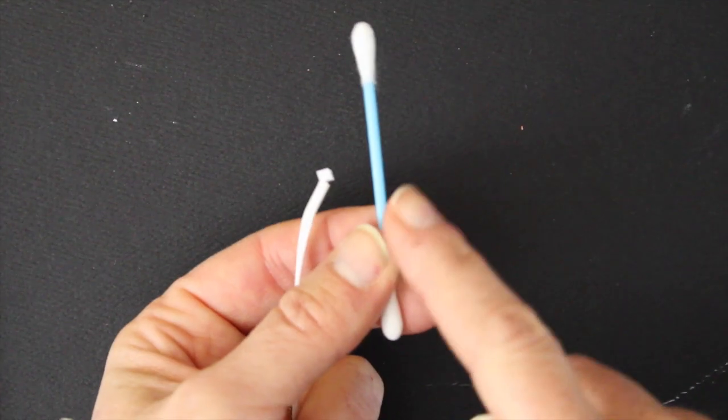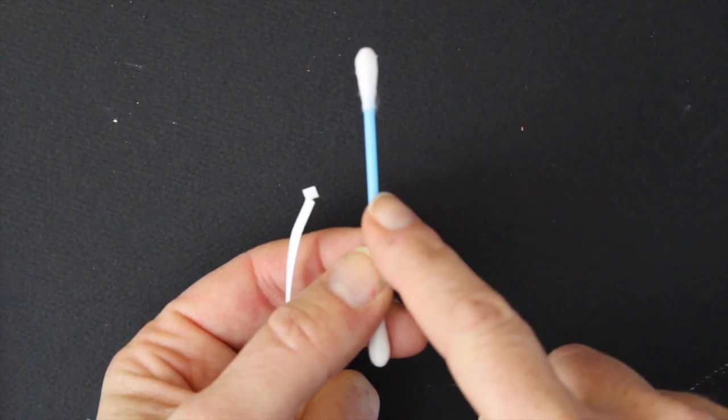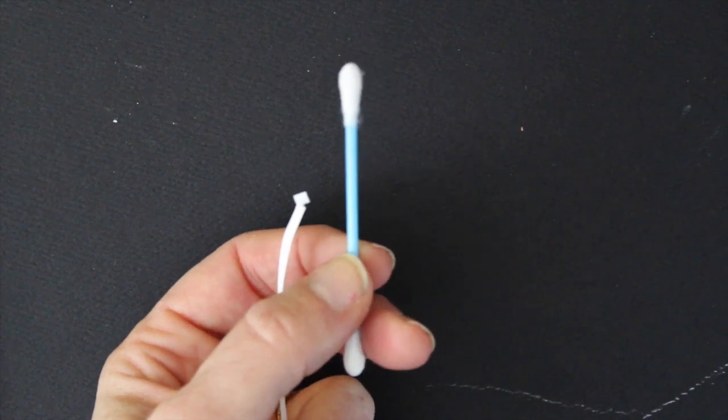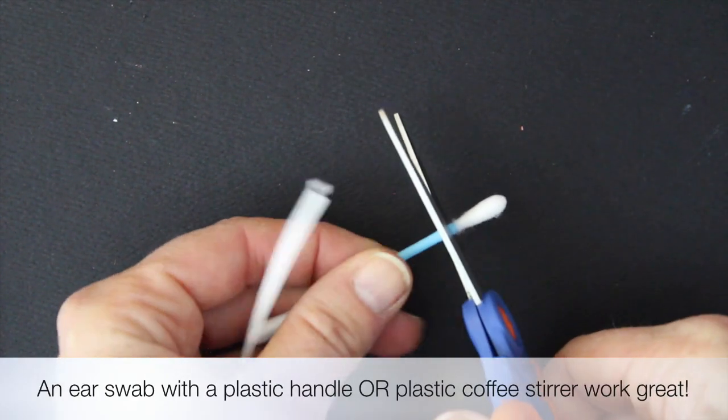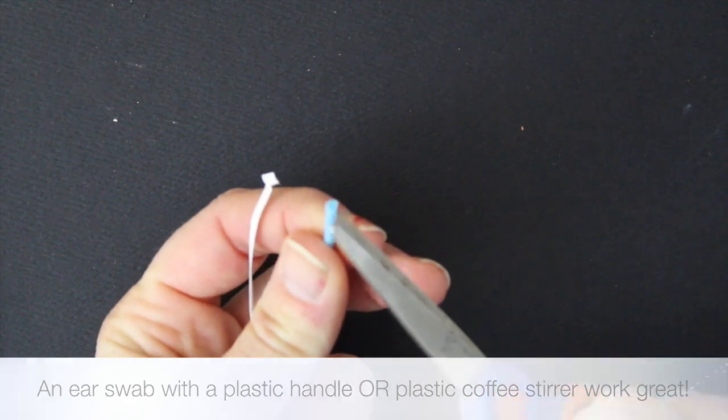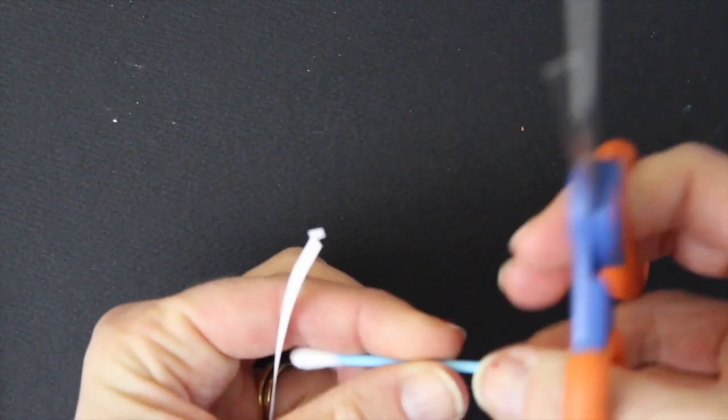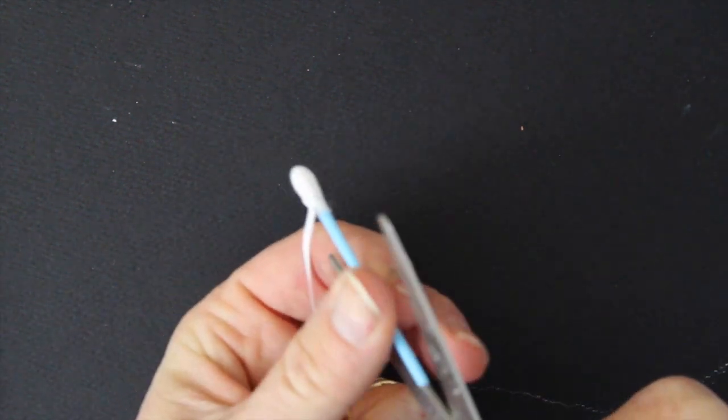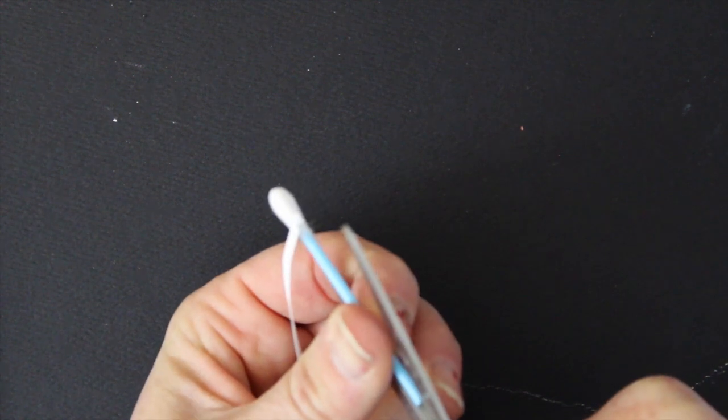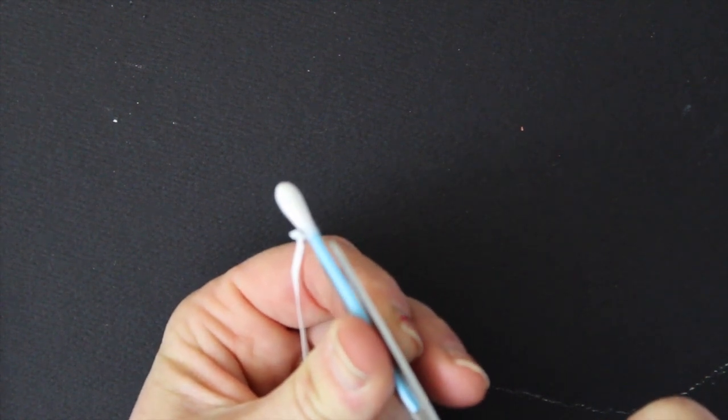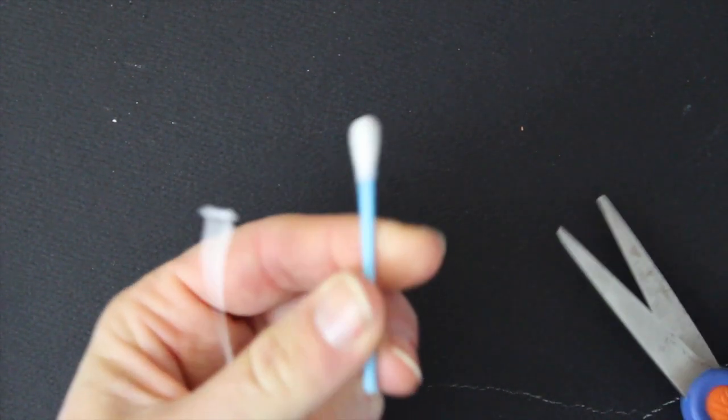You can always use something like a plastic Q-tip or one of those hollow coffee stirrers. To make it, just snip off the cotton end and then very carefully make a slit in the plastic handle.